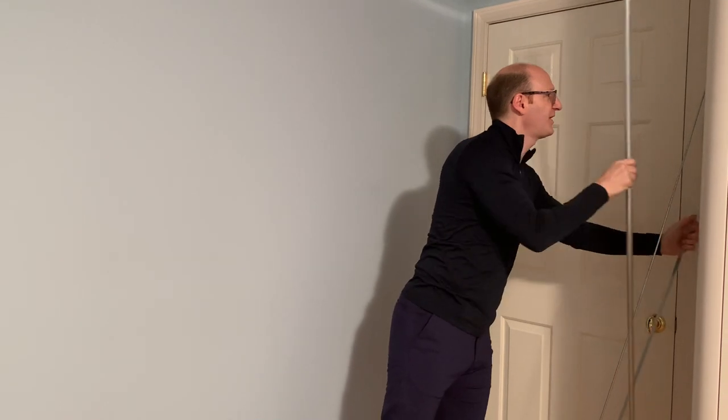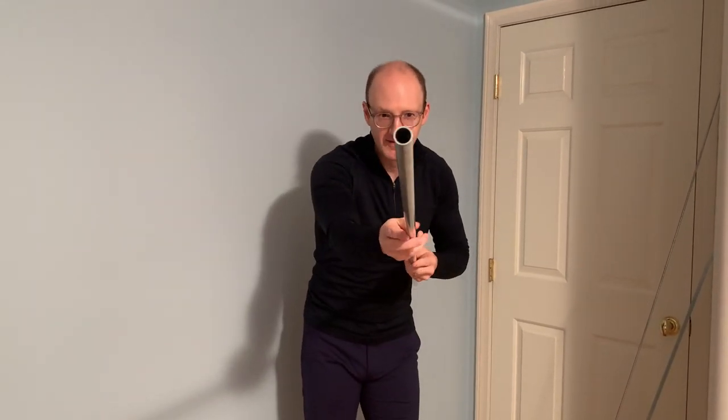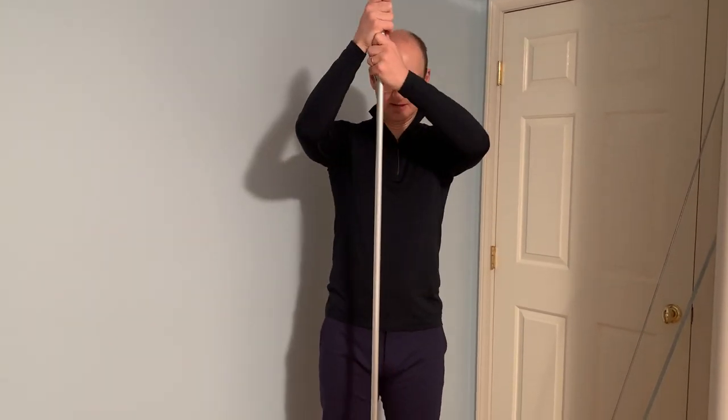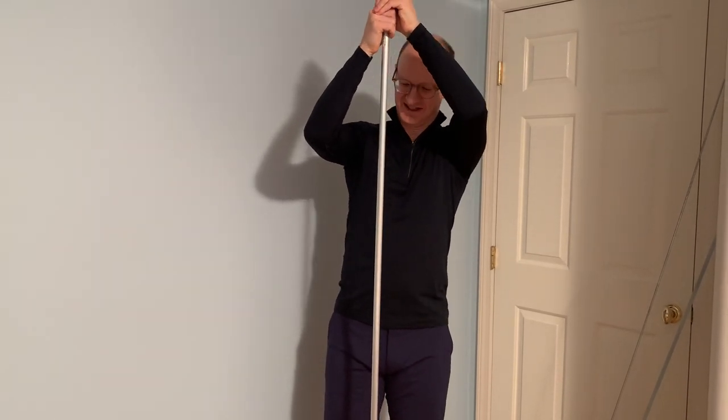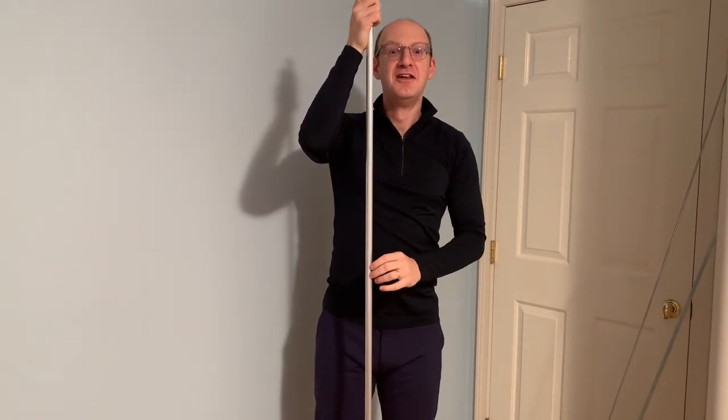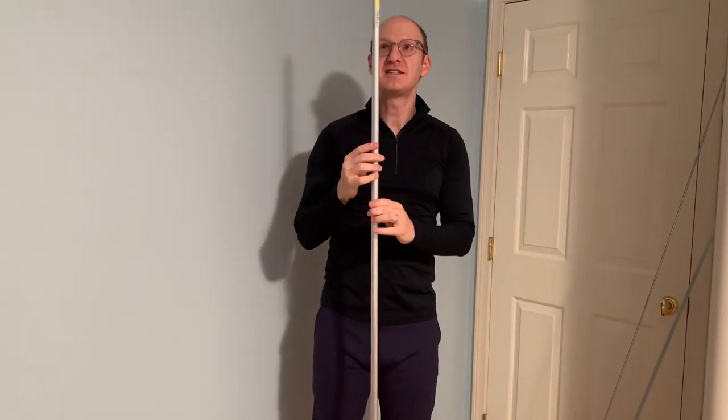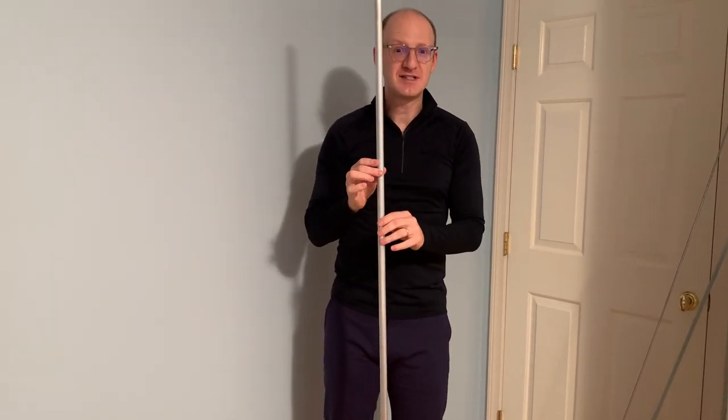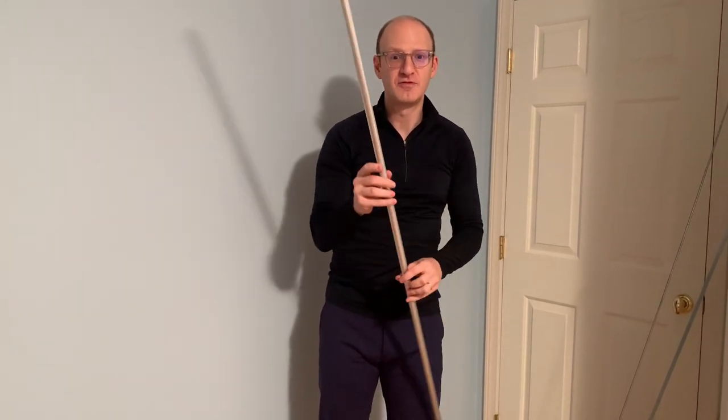And then the fourth and final one is a tube, right there. And this one, if I push down, oh my gosh, forget about it. Nothing is making this one buckle. So this of the four that I've shown of the columns has got the best resistance to buckling all because of the choice of where to put that material in a more efficient manner.